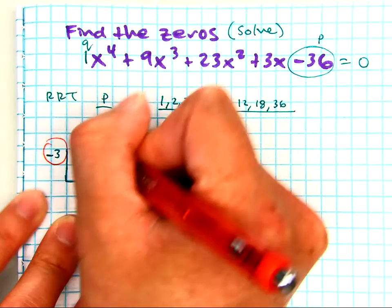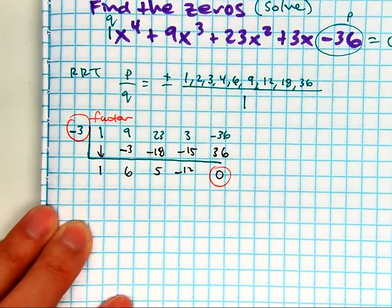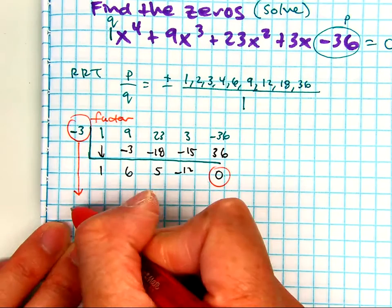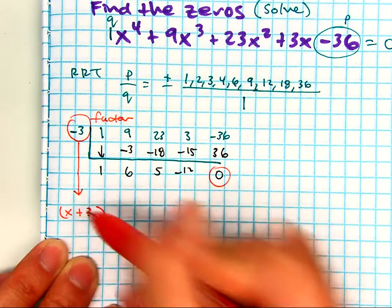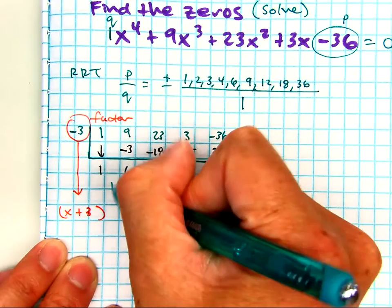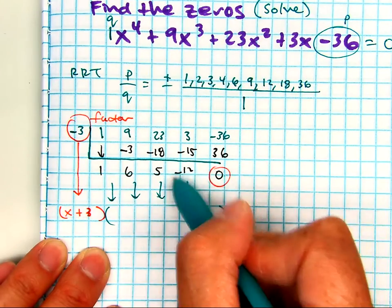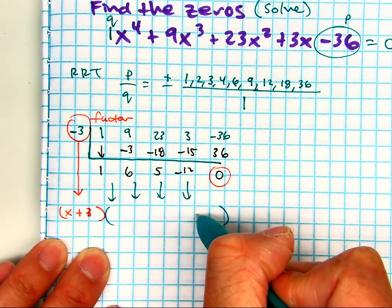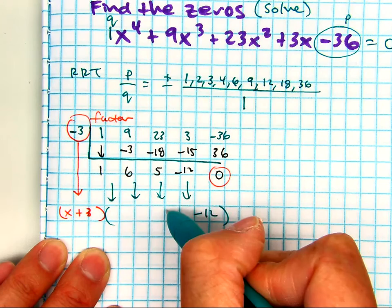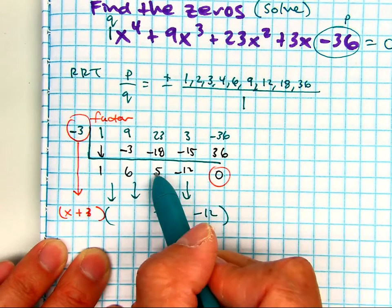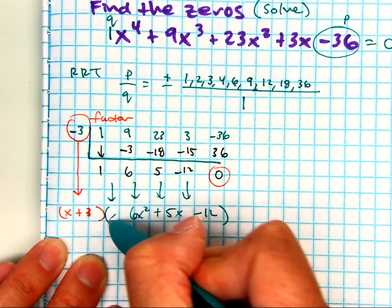This means that this is a factor. Specifically what that means is that you have x, what would you put in here? x plus 3, and then all of this, what are you going to get? Start here. Negative 12, 5x plus, right, because 5 is positive, 6x squared and x cubed.